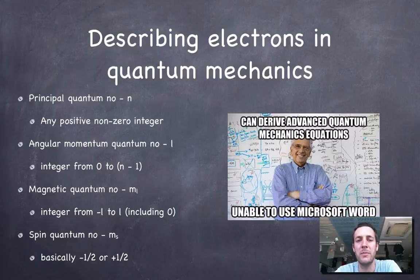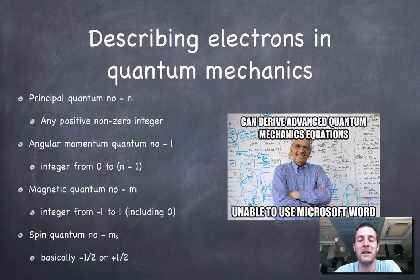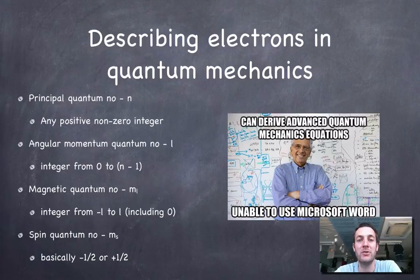So bearing in mind those wise words, and bearing in mind that it's also not tested, let's just introduce quantum numbers, which when applied to an electron will tell us where an electron is in an atom.